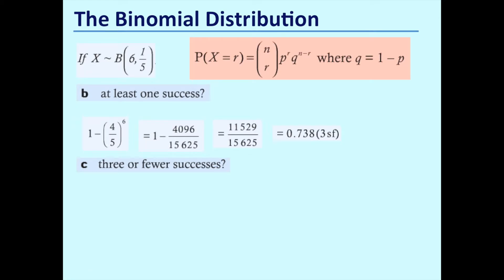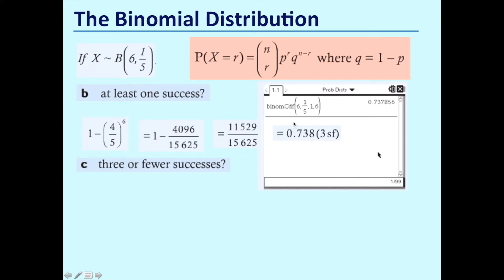Using the calculator, go to the probability option on your menu and this time select binomial CDF — the cumulative distribution function. We've got six trials, the probability of success is one-fifth, and we want everything in the cumulative distribution function between one and six successes. You can just type that into your calculator and you'll get the same answer.